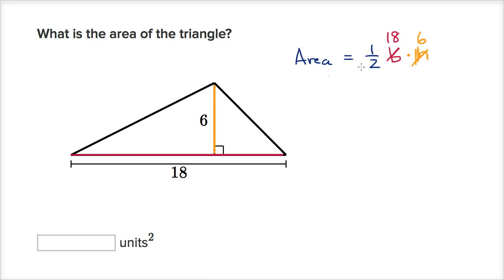Well, let's think about this a little bit. 1/2 times 18 is 9. 9 times 6 is equal to what? 9 times 6 is equal to 54, and we are done. This is 54 square units.